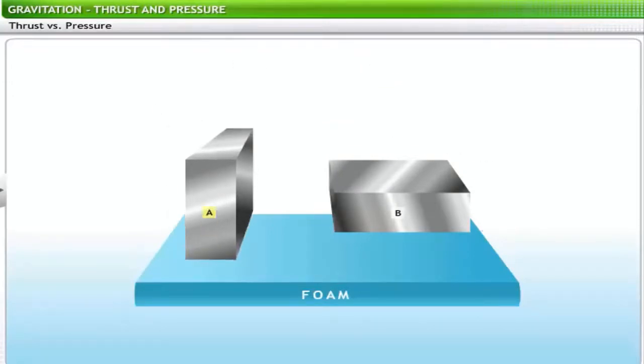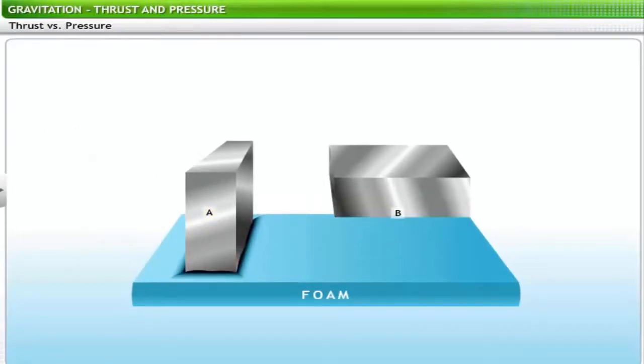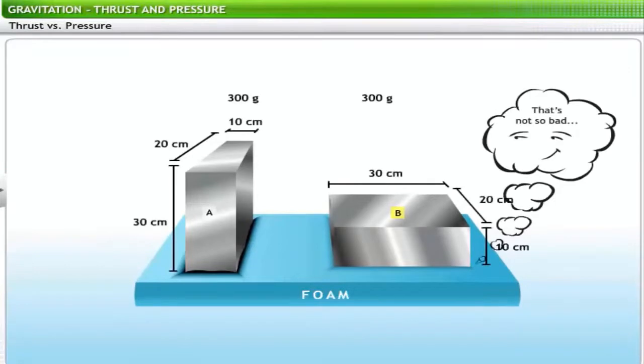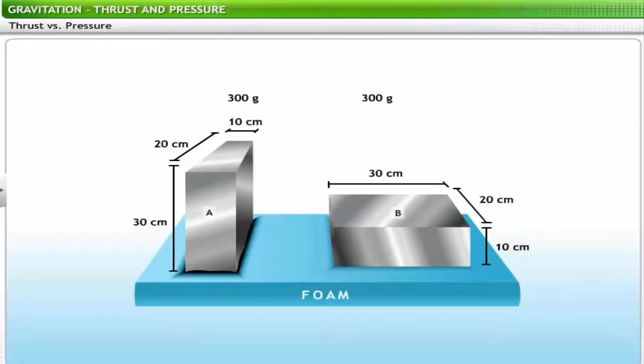Place the metal block A vertically on the foam and the other iron block B horizontally. Now let's compare the compression of the foam where blocks A and B are placed. The foam shows more compression where the metal block A is positioned vertically.